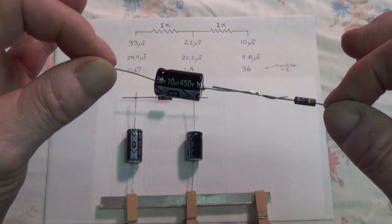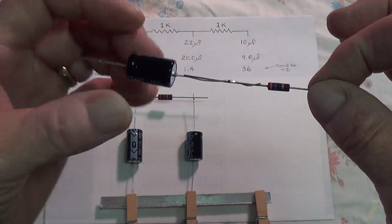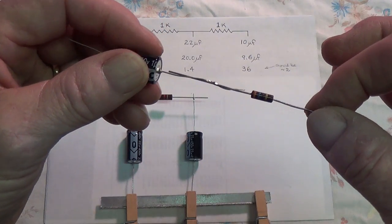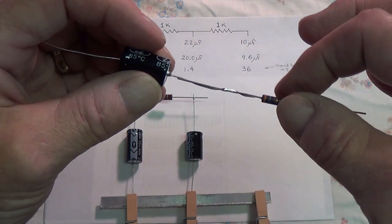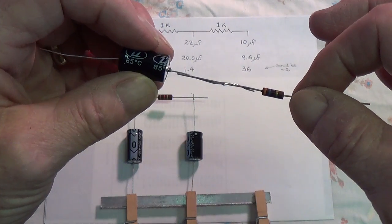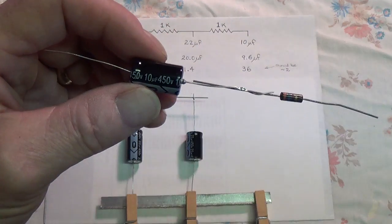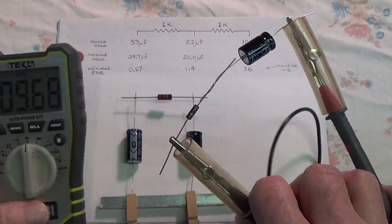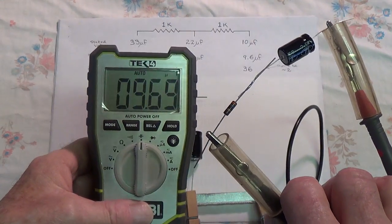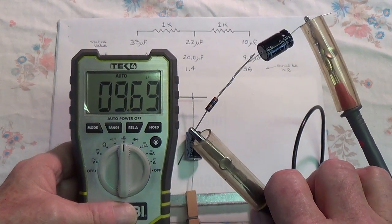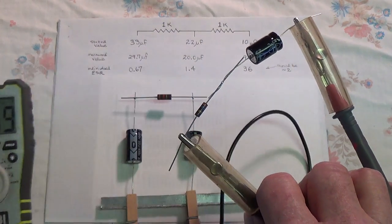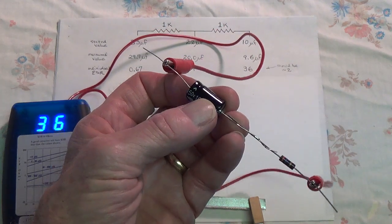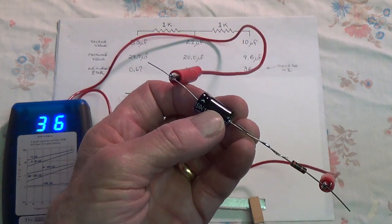this is a 10 microfarad capacitor with an ESR value of 36, which is about 18 or 20 times what it should be. It should be down around 1.8 or something like that. We'll test it just so that you see I'm not making this up. Here's my capacitance meter and it says 9.69 microfarads for our faulty capacitor. And with our nicely zeroed ESR meter we see that we have a reading of 36.